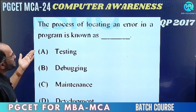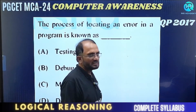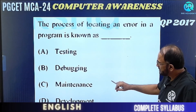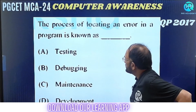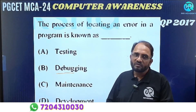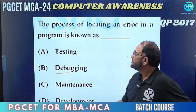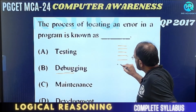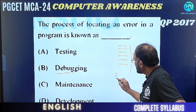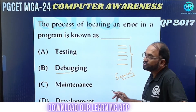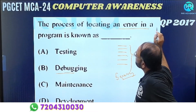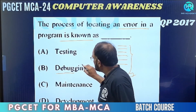The process of locating an error in a program is known as: testing, debugging, maintenance, or development. Bug means an error. Debugging is the process of finding errors in programs written. When you write 100 lines of program and execute it, errors are highlighted. You need to find those errors and correct them — you have to debug it. So error-finding in programs is known as debugging, which is the right answer.